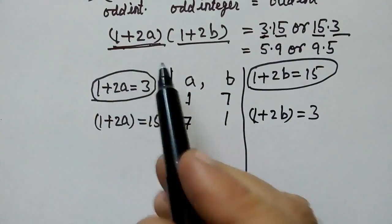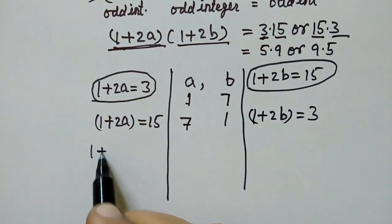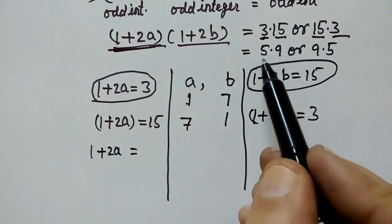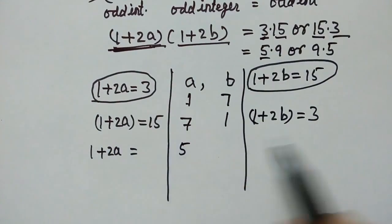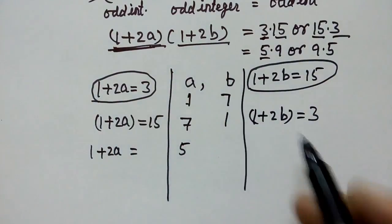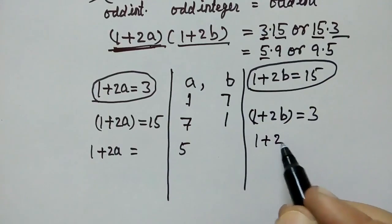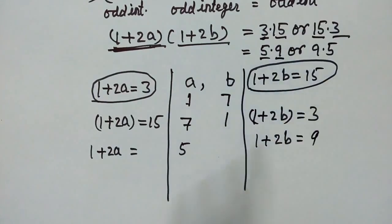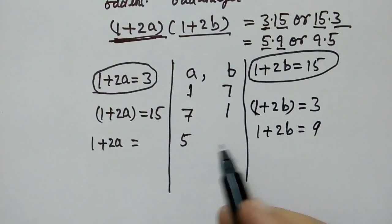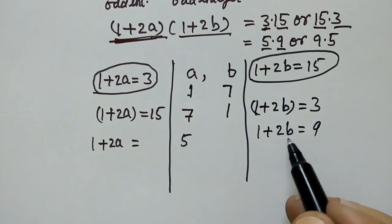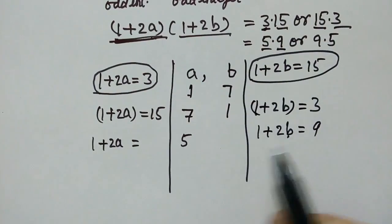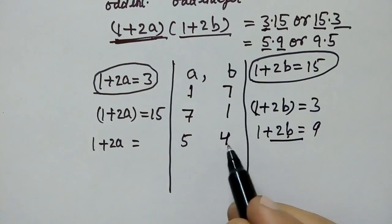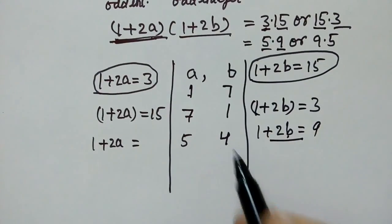Again, we can say: 1 plus 2a equals 5 and 1 plus 2b equals 9. From these equations, the value of b will be equal to 4.